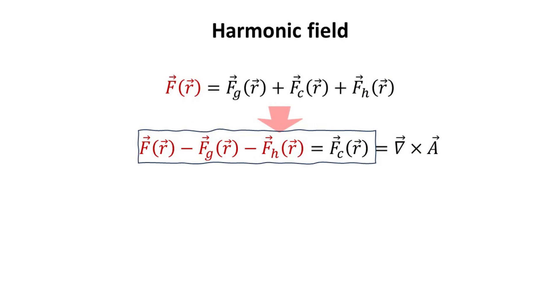We are now left with the last constituent, the curl field F_C, which we can obtain directly. However, before I show you the curl field, let's complete the story by working out the explicit expression for the vector potential.